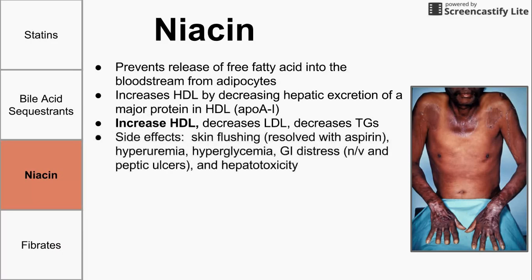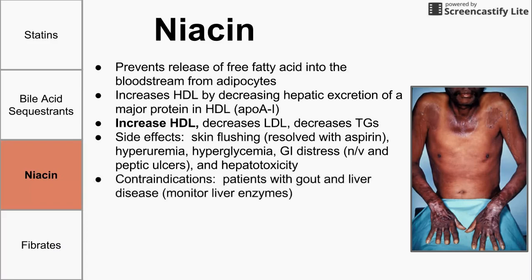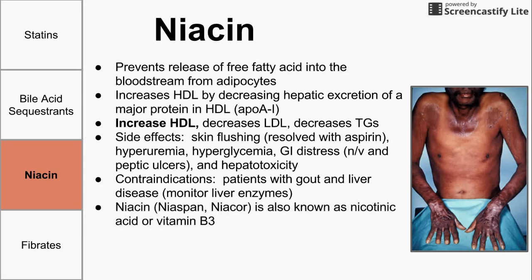Side effects of niacin include skin flushing, which can be resolved with aspirin, hyperuricemia, hyperglycemia, GI distress, and hepatotoxicity. The contraindications relate to some of these side effects. Patients with gout should not receive niacin, since gout involves buildup of uric acid and niacin causes hyperuricemia, which would worsen their gout. People with liver disease should not receive niacin, or if they do, liver enzymes should be heavily monitored due to its hepatotoxicity. Common names for niacin include nicotinic acid and vitamin B3.